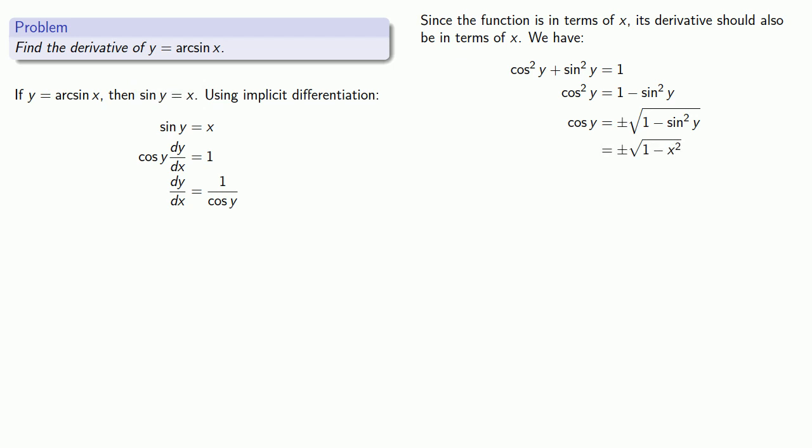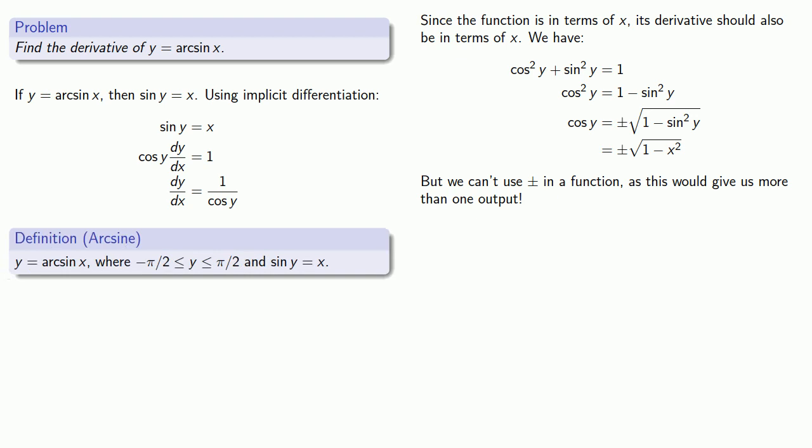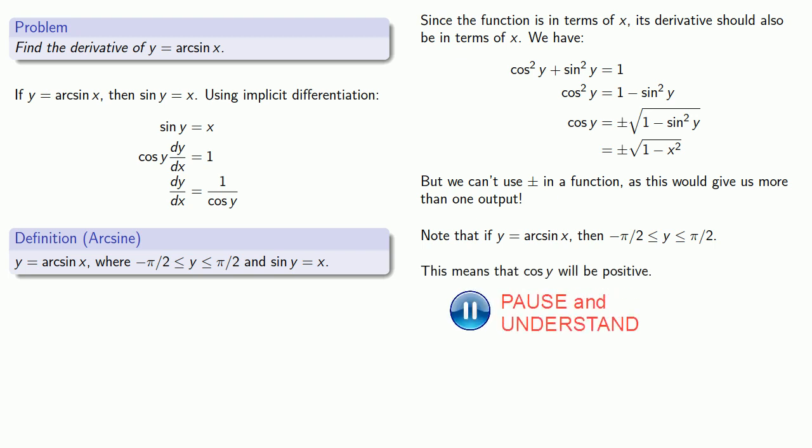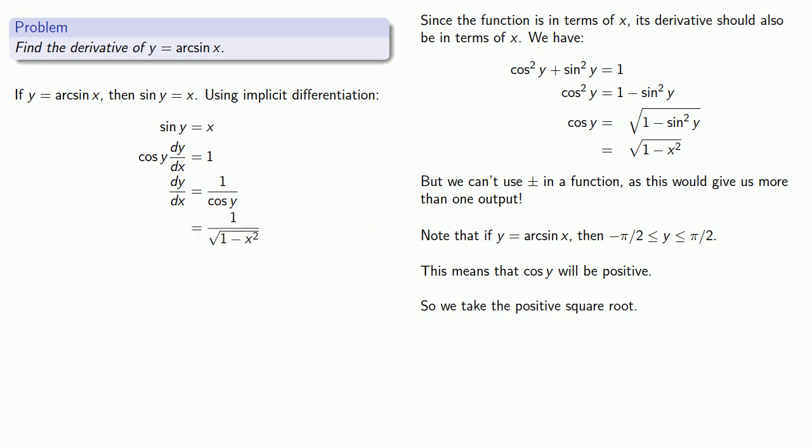However, there's a problem. We can't use plus or minus in a function as this would give us more than one output. We have to make a choice. We'll go back to our definition of arcsine. If y is equal to arcsine of x, then y is between minus π over 2 and π over 2. This means that the cosine of y is going to be positive. So while cosine of y could be plus or minus 1 over x squared, what it actually is, is the positive square root, which we can substitute back into our derivative to get our form of the derivative of arcsine of x.